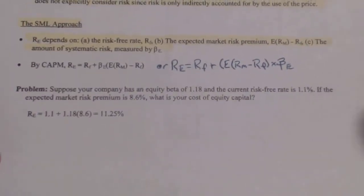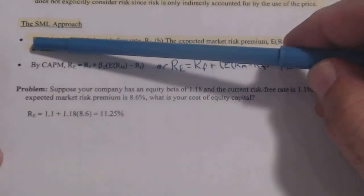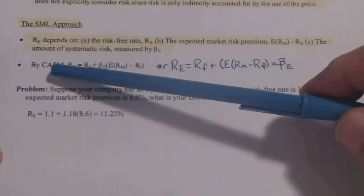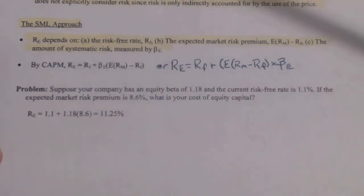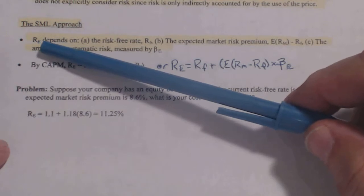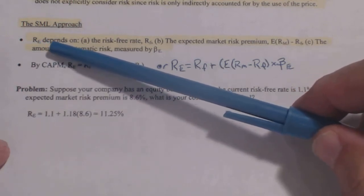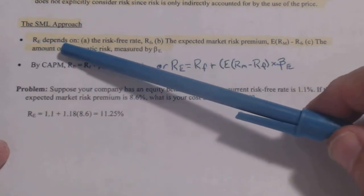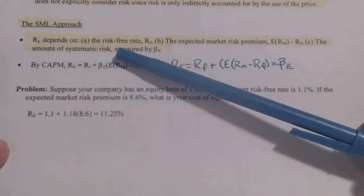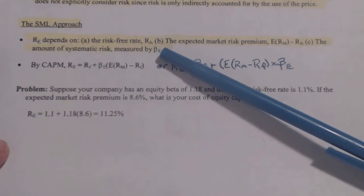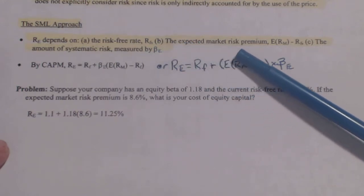The other approach is the SML — security market line approach, which you learned in the last section — also called the capital asset pricing model, CAPM. The return for equity R_E depends on having the risk-free rate R_F and the expected market risk premium.